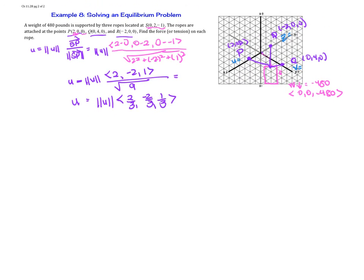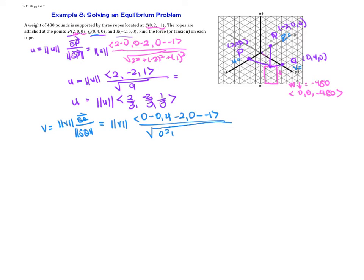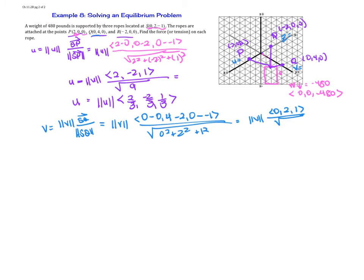Next we find v. V equals magnitude of v times vector SQ over the magnitude of SQ. That gives us (0-0), (4-2), (0-(-1)), which is <0, 2, 1>. The magnitude is the square root of 0+4+1 = square root of 5. So v equals magnitude of v times <0, 2/√5, 1/√5>. I'll leave it like that for now.